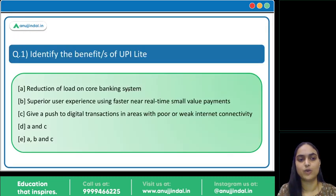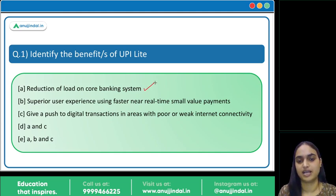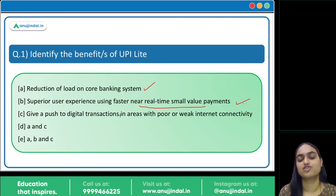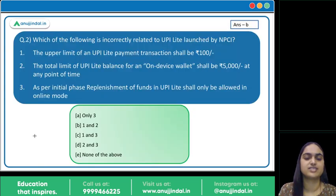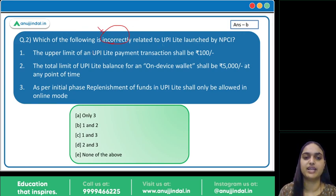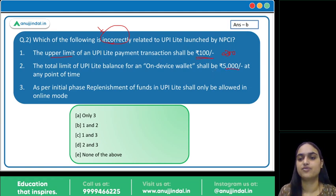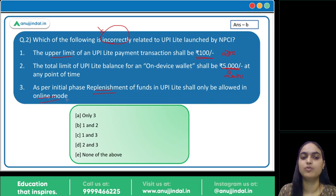Coming back to the first question identifying the benefits of UPI Lite: first, reduction of load on the core banking system — correct. Second, superior user experience for near real-time small value payments — correct. Third, push to transactions held in digital mode in areas with poor internet connectivity — correct. So all of the benefits listed are correct; the answer is option E. The second question, also related to UPI Lite, asks to identify the incorrect statement. Upper limit of rupees 100 per transaction — incorrect, it is 200. Balance limit in the wallet of 5000 — incorrect, it is 2000. Replenishing funds in UPI Lite done online — this is correct. So the first and second are incorrect; the answer is option B.